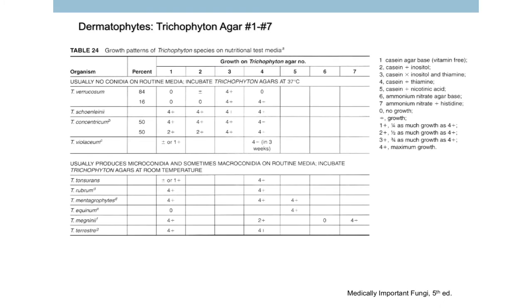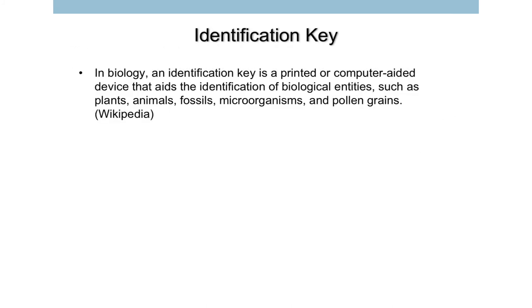For the dermatophytes there is a special test, because some dermatophytes have special vitamin requirements. We use a set of Trichophyton agars to differentiate them. Trichophyton agar number one is a base with some vitamins, and from number two to six they have different combinations of vitamins. For example, if you want to differentiate T. tonsurans from T. rubrum, you inoculate the fungus on Trichophyton agar number one and four — if it grows better on number four but not so well on number one, it is T. tonsurans. However, sometimes it doesn't work — trust me.